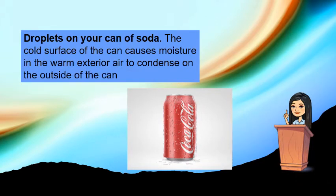Another example is droplets on your can of soda. The cold surface of the can causes moisture in the warm exterior air to condense on the outside of the can. So condensation takes place when you see droplets on your can of soda.